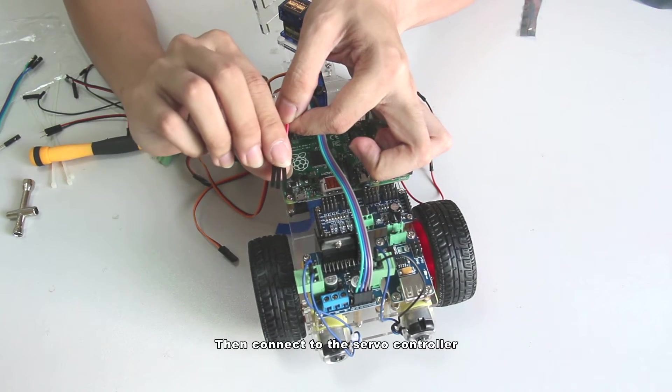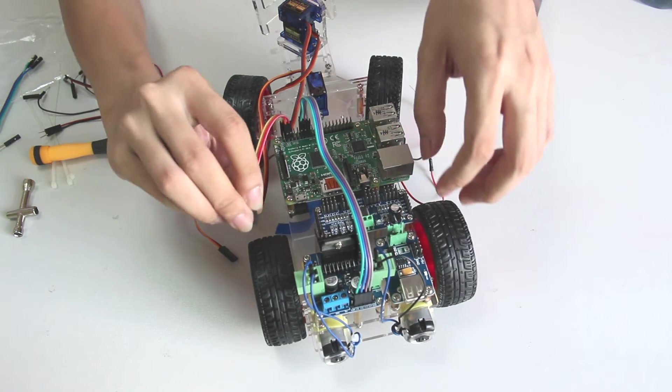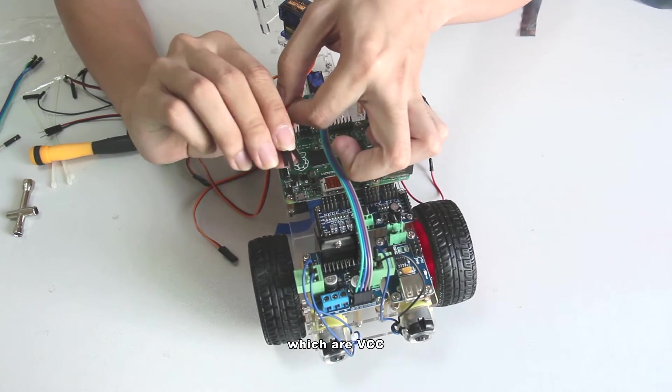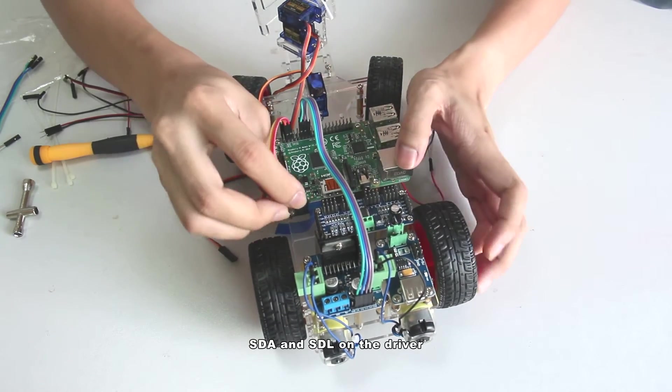Then connect to the servo controller. Plug the wires into these 3 pins which are VCC, SDA and SCL on the driver.